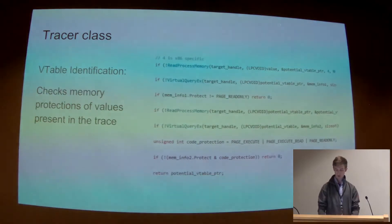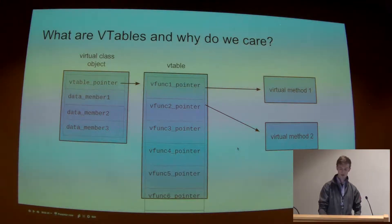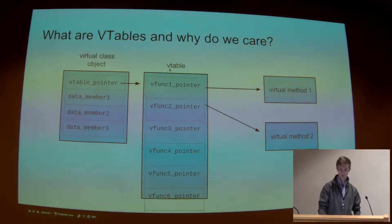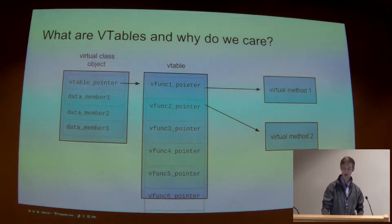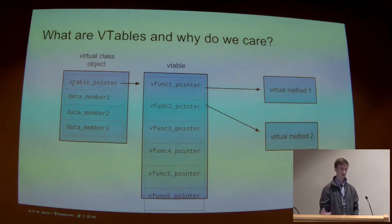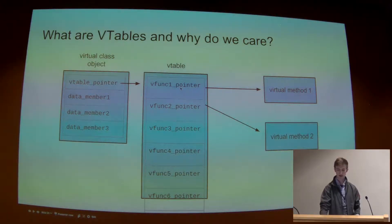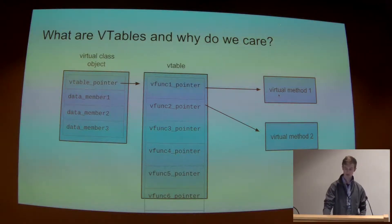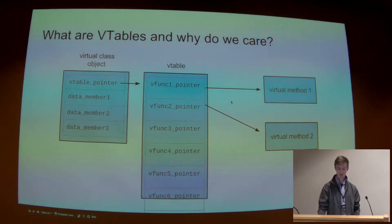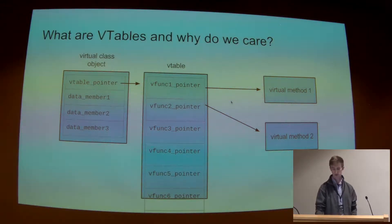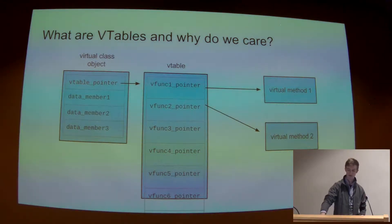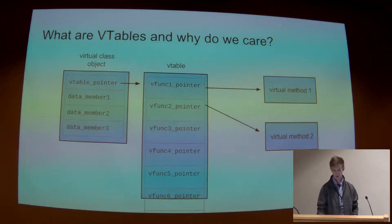The way the tool identifies V-tables is by looking at page protections. For a potential V-table pointer along the trace, it looks at the page protection of the pointed-to value. V-tables are going to be in read-only memory, so if what's at the start of some value in our sequence points to read-only memory, we might have a V-table. Then we look at where that points — if it points to executable memory, that's a strong indication we've found a V-table, because virtual methods live in executable memory. It's not a perfect heuristic, but I've never seen a false positive or negative with this technique, so it seems to work fairly reliably.